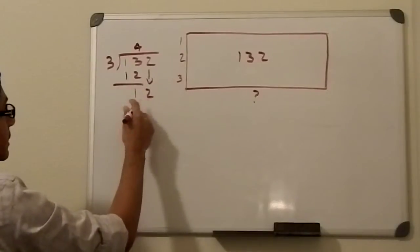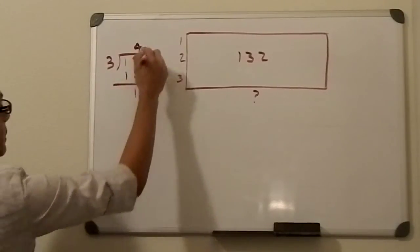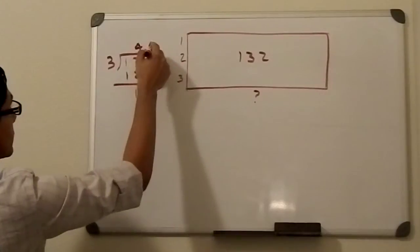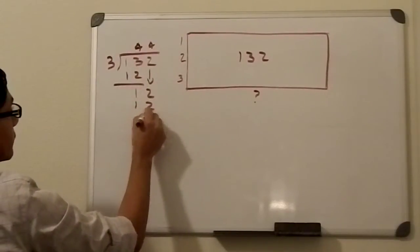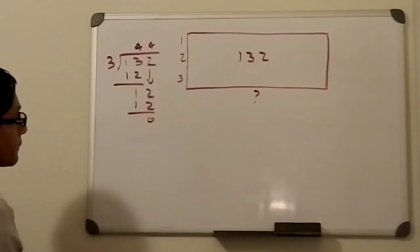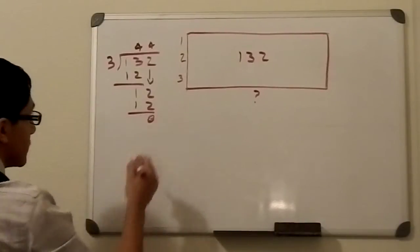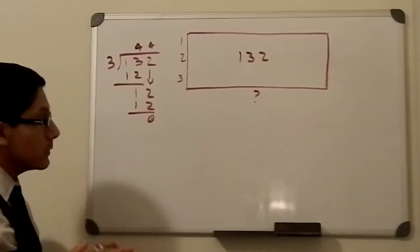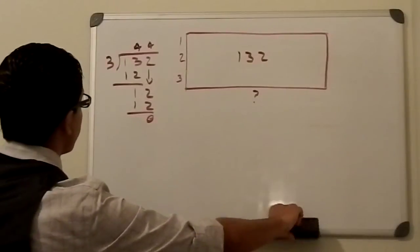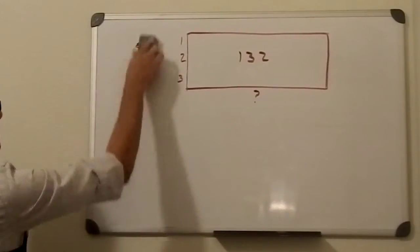To get 12 again. 3 goes into 12 four times. 4 times 3 is 12. Subtract that, we get 0. And that is basically how the algorithm works.